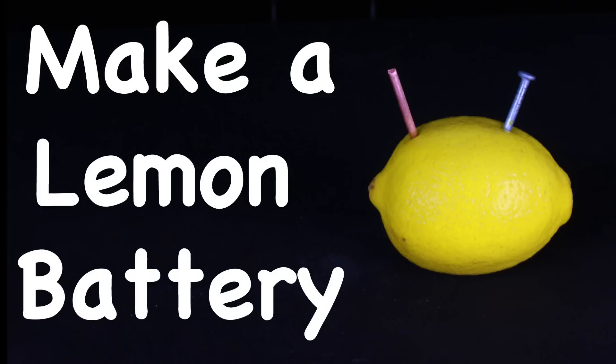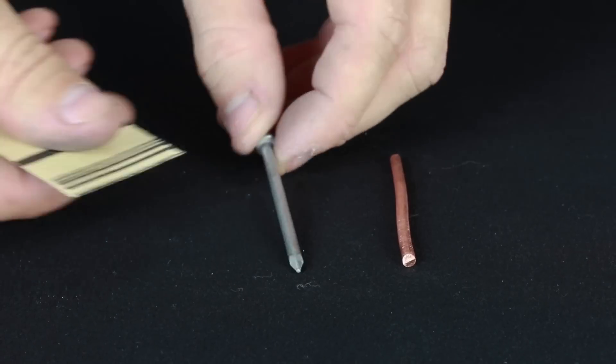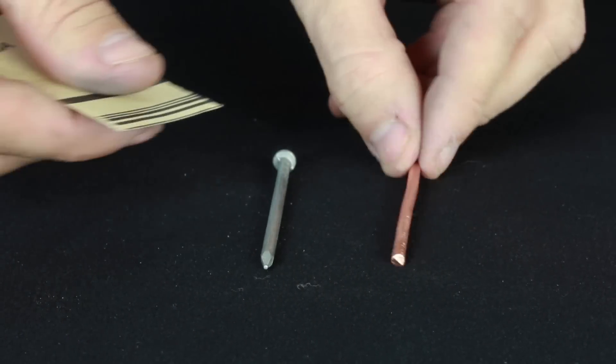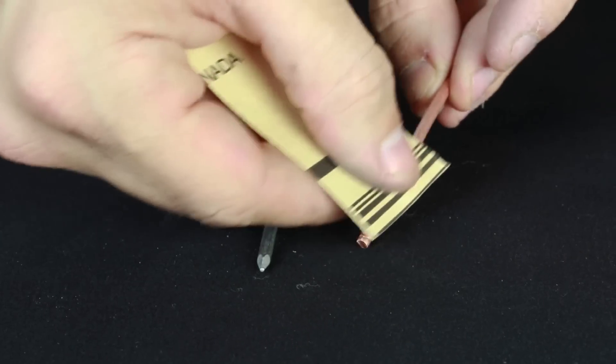Bearded Science Guy here and today I'm going to show you how to make a lemon battery. To begin with, take a zinc galvanized nail and a piece of copper wire and sand off any metal oxides which may have formed, exposing the zinc and copper underneath.